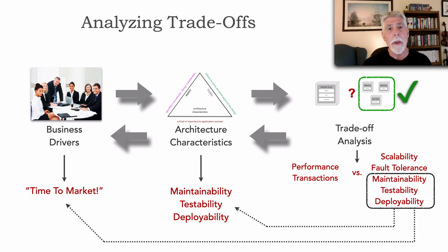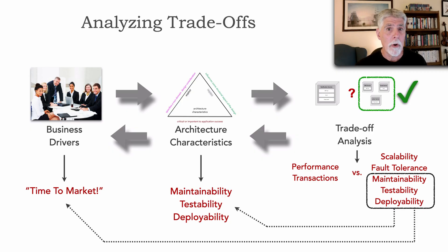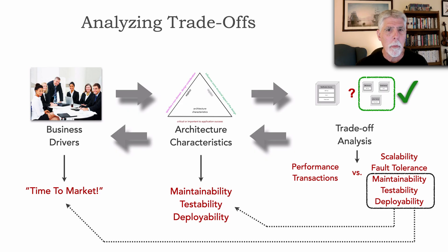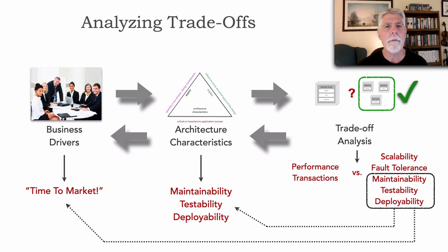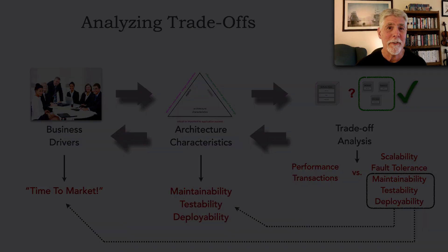You can see the balance between these two techniques. Modern trade-off analysis allows us to make a decision based on some sort of justification — that business need. The last responsible moment technique comes in by gathering enough information: the business needs and the corresponding architecture characteristics the architecture needs to support. These two techniques are two out of many that will help you avoid analysis paralysis when making architecture decisions.